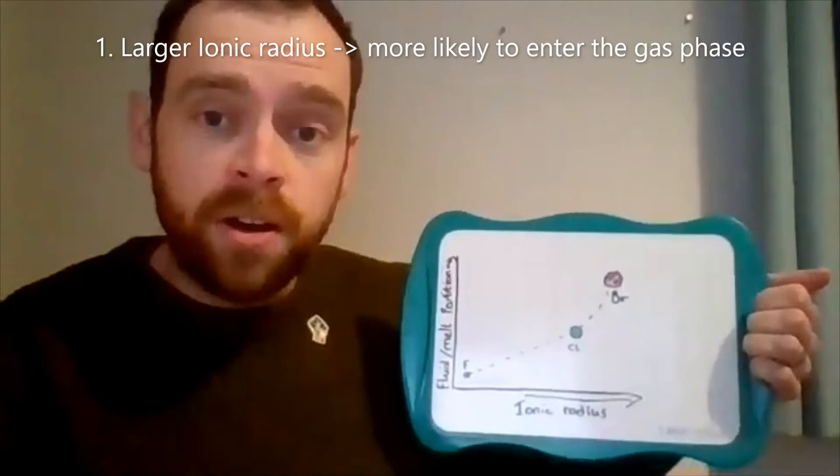The larger the ionic size of the halogen ion, the more likely they are to enter the gas phase.